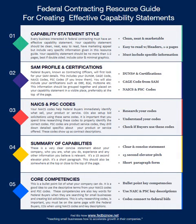A capability statement is actually a marketing tool for you when you want to meet with or talk with federal buyers. It's one of the basic things you should have — it's like a brochure, but a brochure that's structured in a very specific way and is specifically for federal contracting. It can be one or two pages, but it should be two-sided if possible.